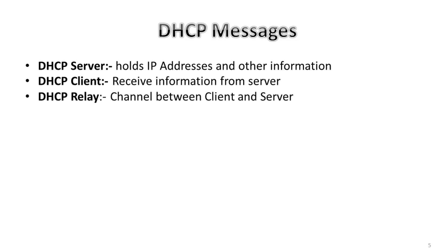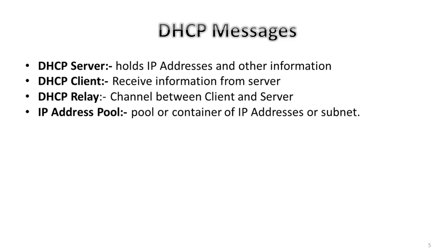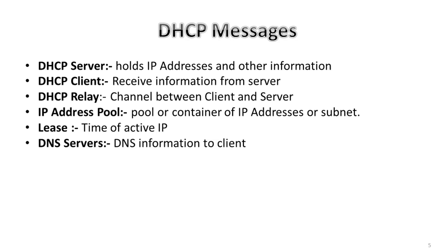The DHCP relay acts as a communication channel between the DHCP client and server. The IP address pool is the pool or container of IP addresses possessed by the DHCP server; it has a range of addresses that can be allocated to devices. The lease is simply the duration for which the information received from the server is valid — upon expiration, the server must reassign the lease to the client.